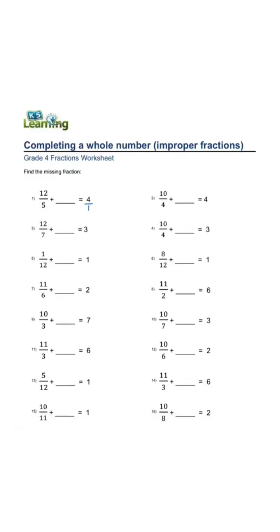4 over 1, denominator is 5. 4 times 5, 1 times 5 equals 20 over 5. 20 minus 12 is 8 over 5.